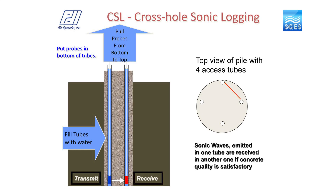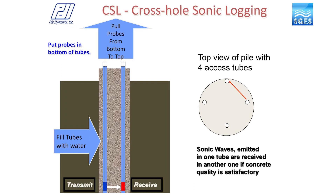The top of the access tubes shall also be closed in order to avoid any debris falling in and obstructing the CSL testing. CSL tests are performed somewhere between three to ten days after pouring the concrete. This involves inserting sonic probes to the bottom of the access tubes — one transmitter and another receiver.